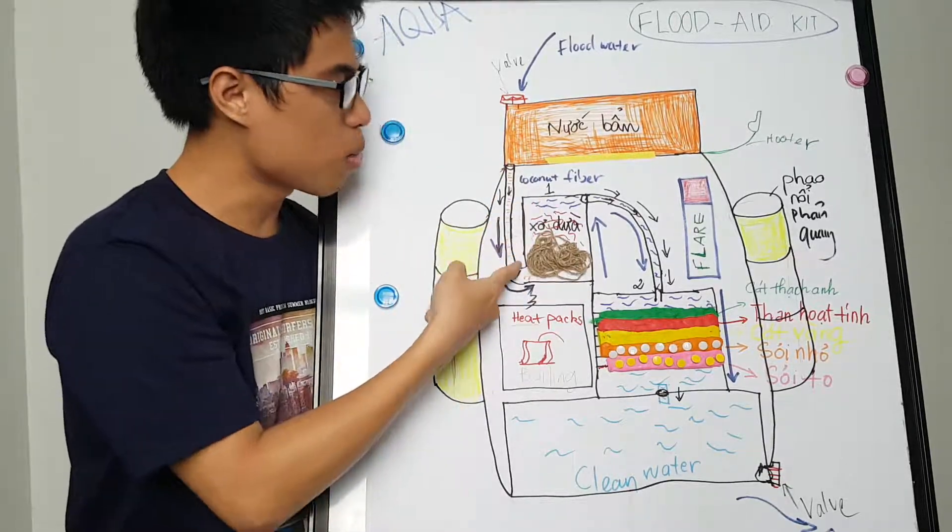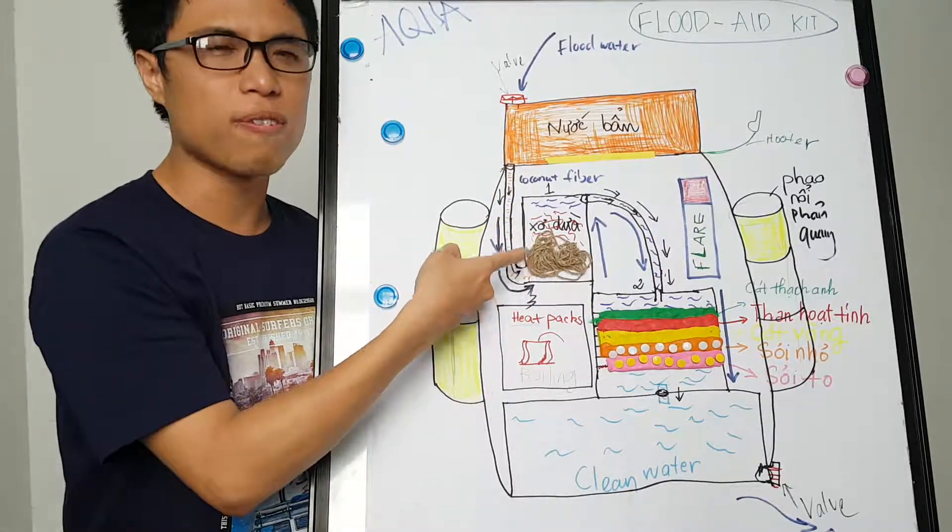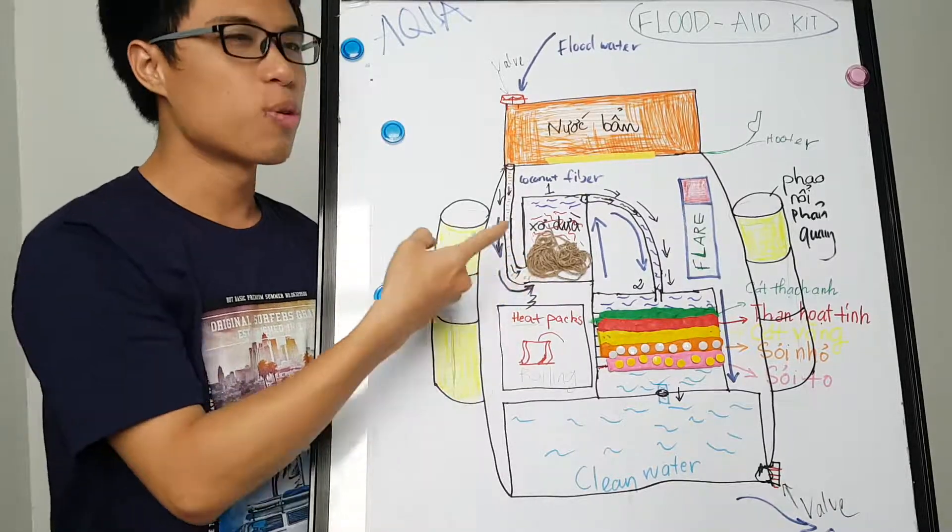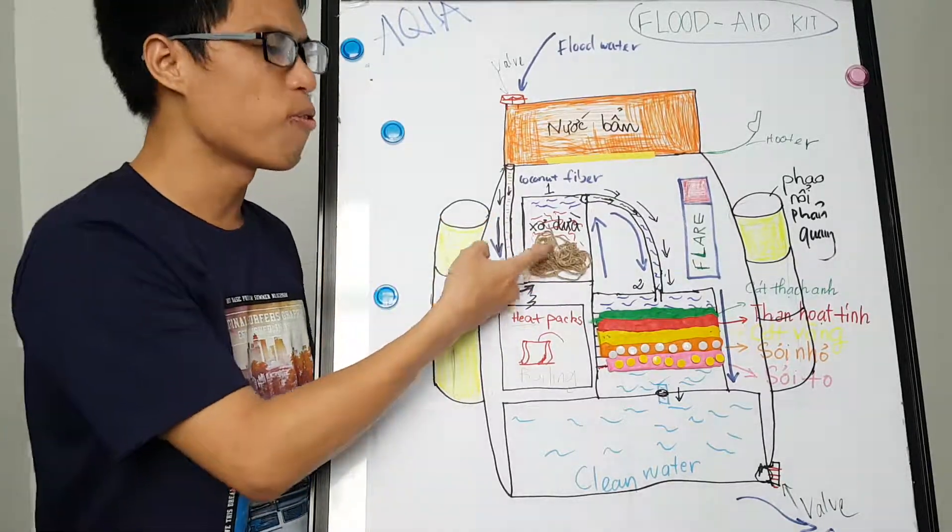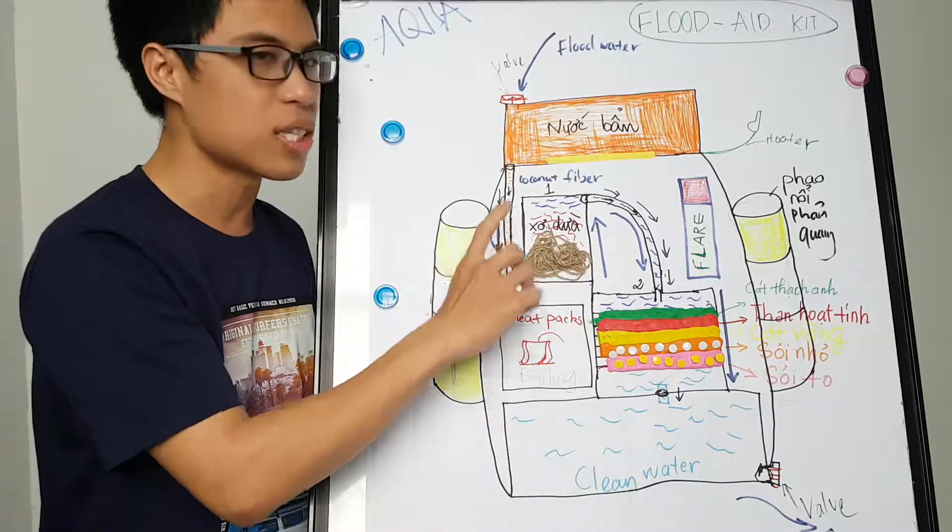It will flow to the first block we call the coconut fibering block, using the process reverse endorsement to fill all of the heavy metal elements out of the water.